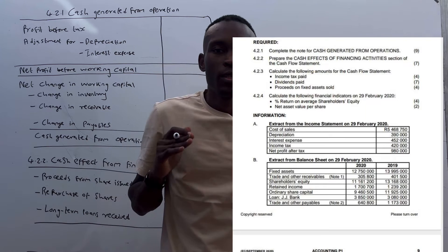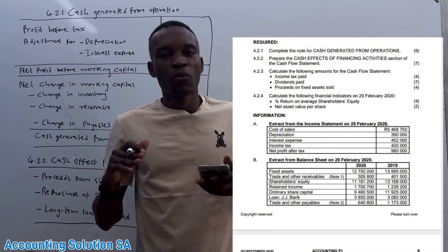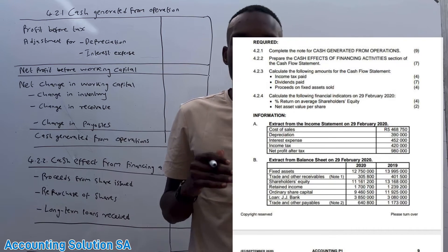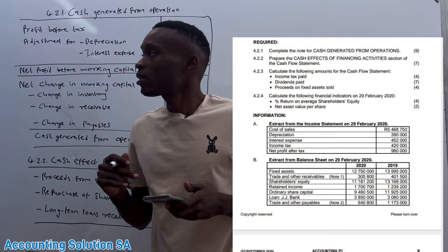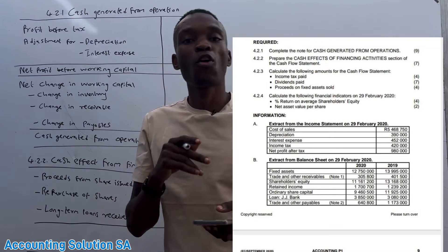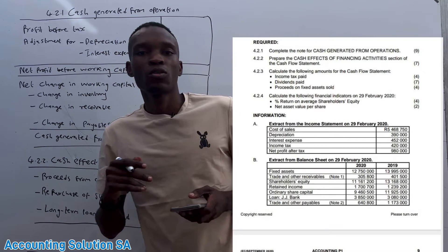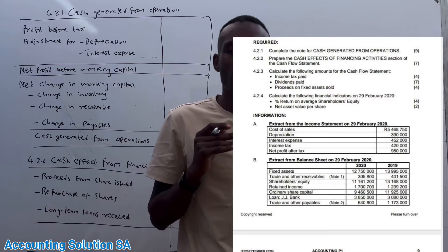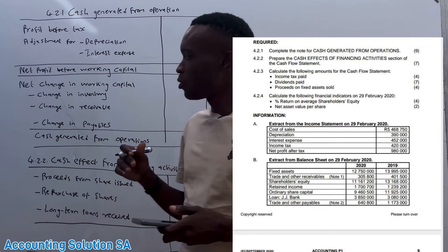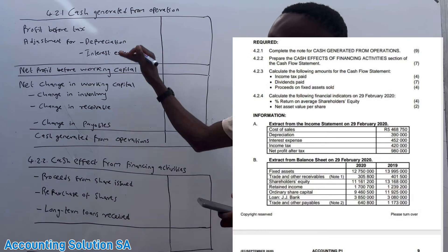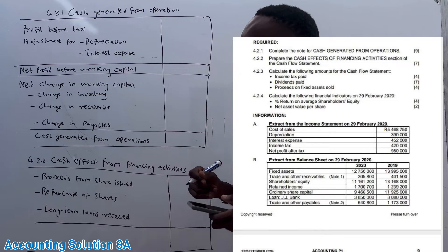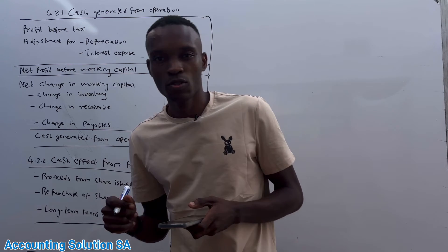In this video we are going to do a note which is under a cash flow statement. We call it 'cash generated from operations.' Before you start with your cash flow statement, this is the first note that you need to do.